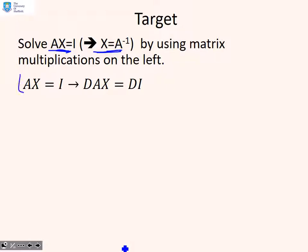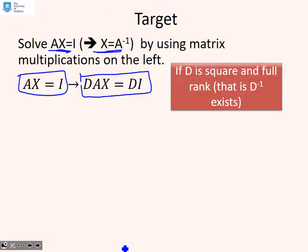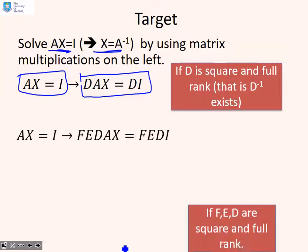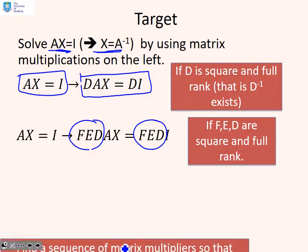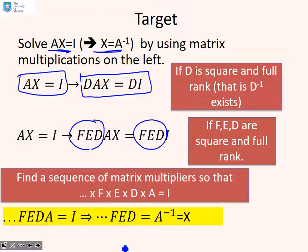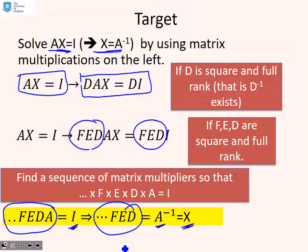We say A × X = I implies D × A × X = D × I. If D is full rank — the same as in the previous videos — we could equivalently apply lots of pre-multipliers: F × E × D × A × X = F × E × D × I. The end point is: if we can find a series of pre-multipliers onto A which gives the identity, then those pre-multipliers must be A⁻¹, which will be our X.